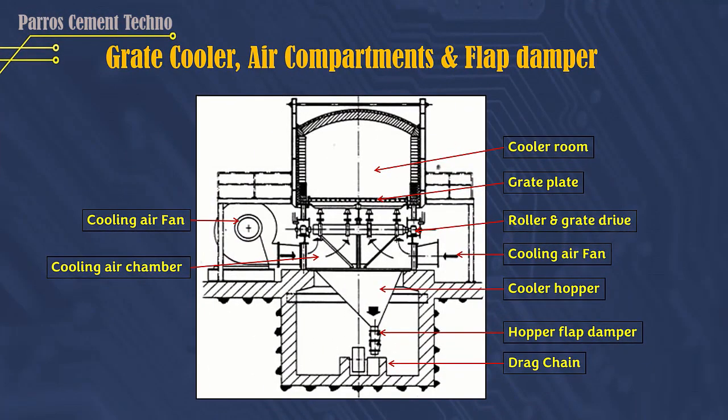This is a sample image of the grate cooler air compartment and damper flap. We can see in the picture there is a cooling room with grate plates installed, a roller driving the grate, a cooling air fan installed beside the cooling room, a cooling air chamber under the grate plate, and a hopper whose function is to collect clinker dust. There is also a damper flap to remove clinker dust by opening the damper flap, and a drag chain to transport the clinker dust material to the next transport means to the clinker silo.